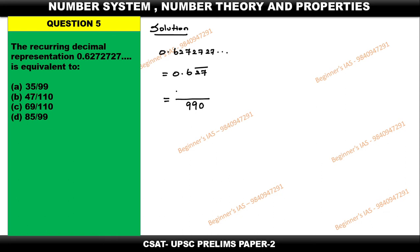Just in the numerator write the whole numbers, which means full number 627, then minus non-recurring number. Here 6 is non-recurring, therefore write 6 here. Then subtract: 621 by 990.